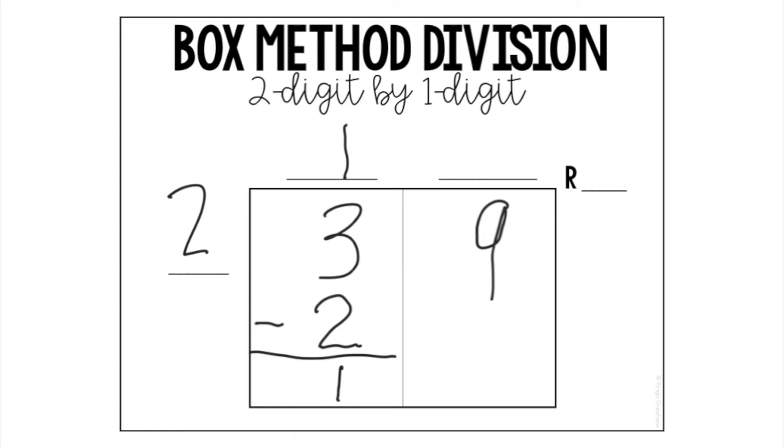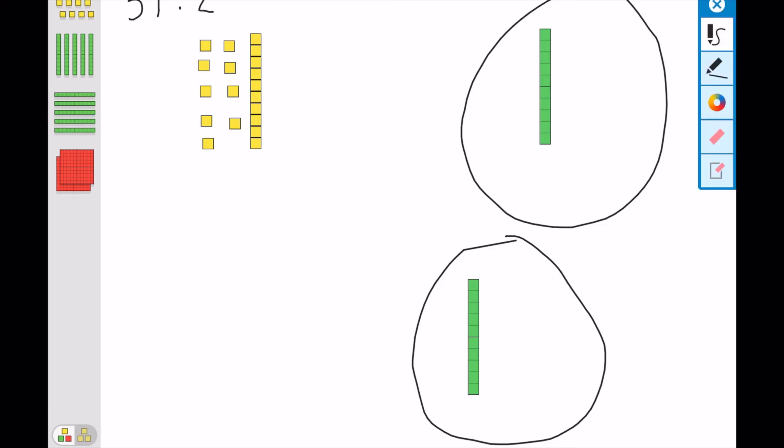In the model, what I do is I take that 1 right there and I'm actually going to draw an arrow and then I'm going to write a 1 right there in front of the 9 to show that now I have 19 1s. And you can see here, I do. I have 19 1s. See all those 1s? 19 of them. So that's what I have left and I need to divide that into two groups.